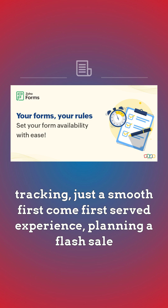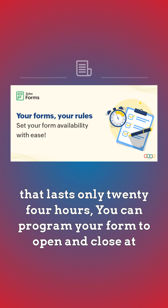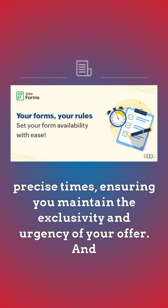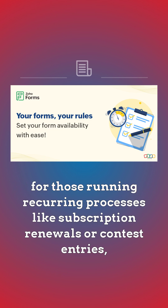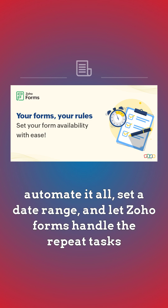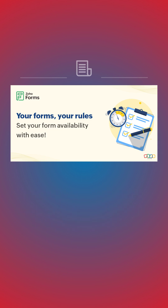Planning a flash sale that lasts only 24 hours? You can program your form to open and close at precise times, ensuring you maintain the exclusivity and urgency of your offer. And for those running recurring processes like subscription renewals or contest entries, automate it all. Set a date range and let Zoho Forms handle the repeat tasks effortlessly.